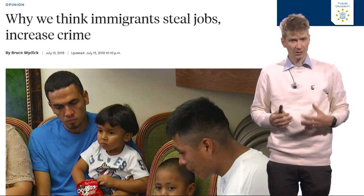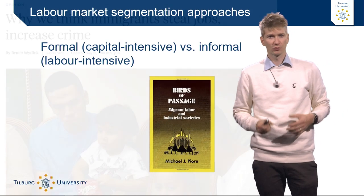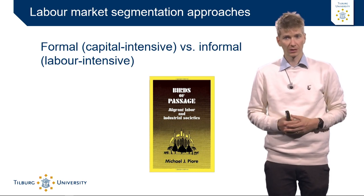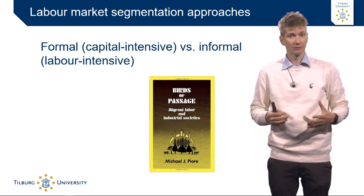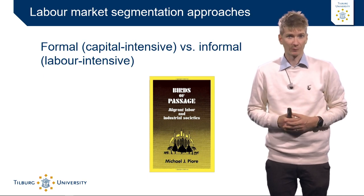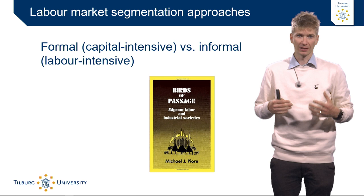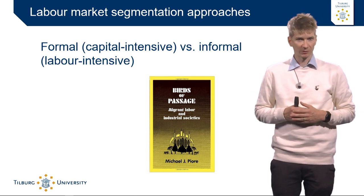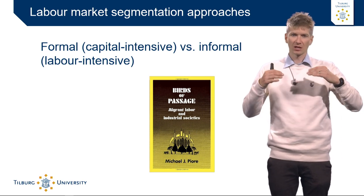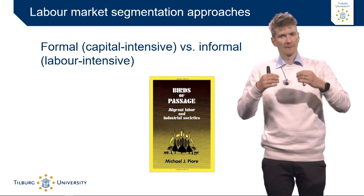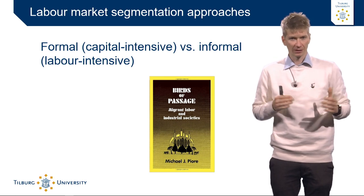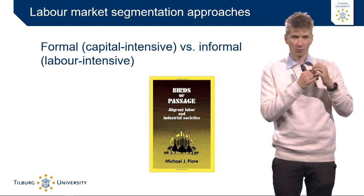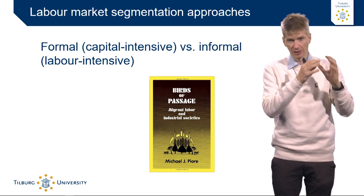To understand why this is not the case and why migrants move, we have to look at the distinction made by sociologists, particularly in the 1970s, between the formal capital intensive segment of the labour market and the informal labour intensive segment of the labour market. Labour market segmentation approaches generally depart from the idea that the labour market can be divided into two main segments. On the one hand, you have the formal capital intensive segment, which is the primary labour market.